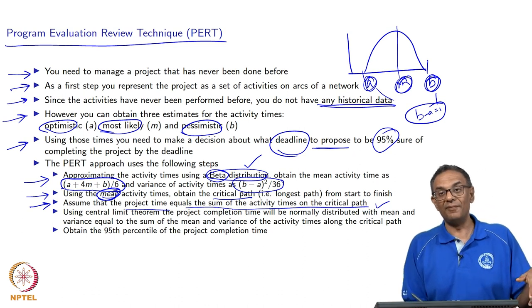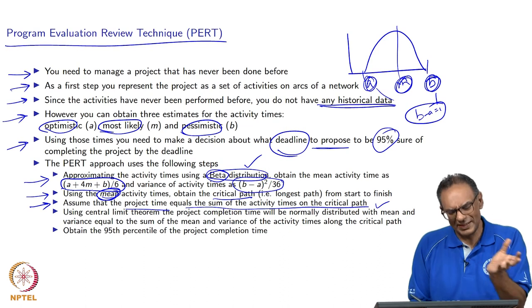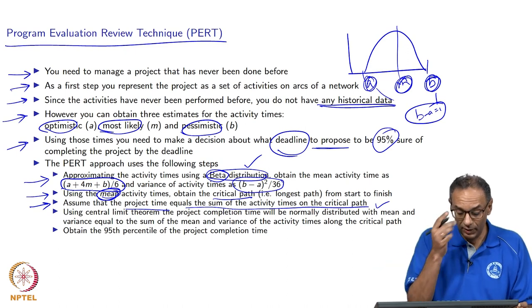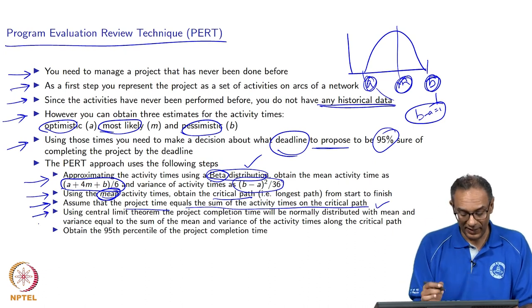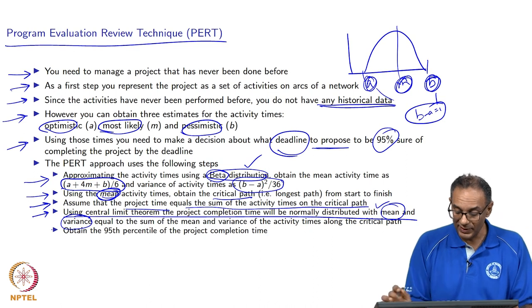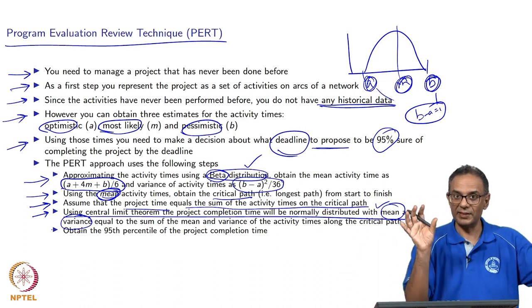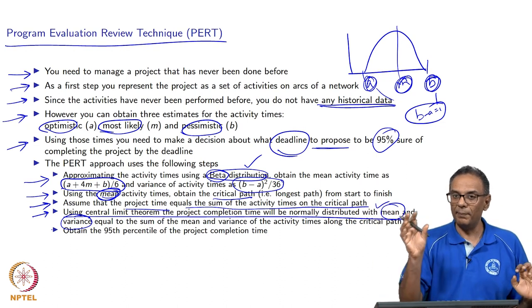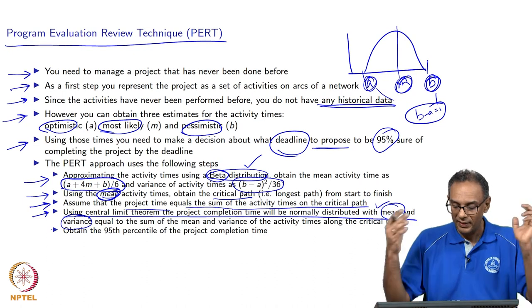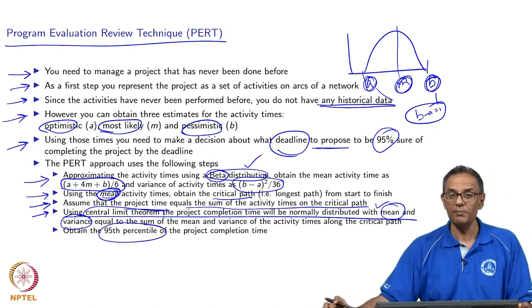The critical path is computed using the average values. As a decent approximation, among the average times we take the longest. Then we apply the Central Limit Theorem: the project completion time is normally distributed, with mean equal to the sum of the means along the critical path and variance equal to the sum of the variances along the critical path. Adding independent random variables yields a normally distributed result, and then we find the 95th percentile of the project completion time.